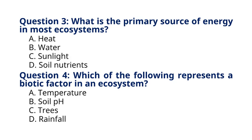Question 4. Which of the following represents a biotic factor in an ecosystem? A. Temperature. B. Soil pH. C. Trees. D. Rainfall. The correct answer to question 4 is option C, Trees. Explanation: Biotic factors are living components of an ecosystem, such as plants, animals, and microorganisms, while abiotic factors are non-living components.